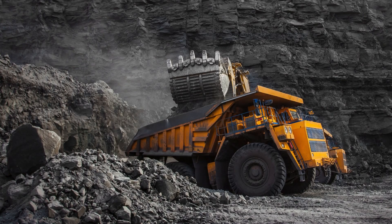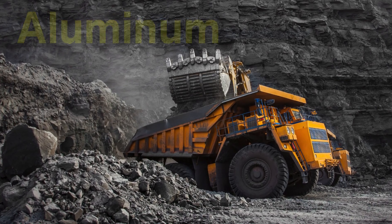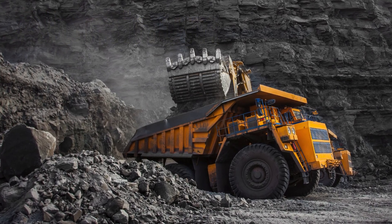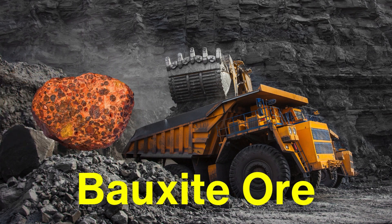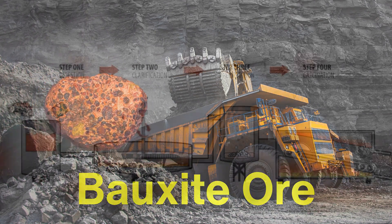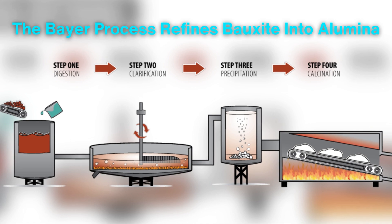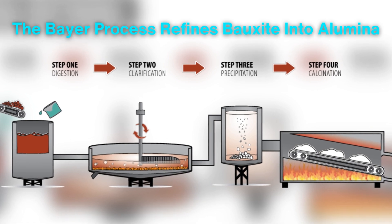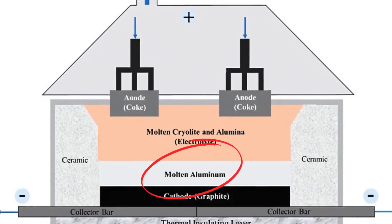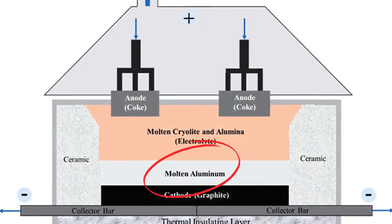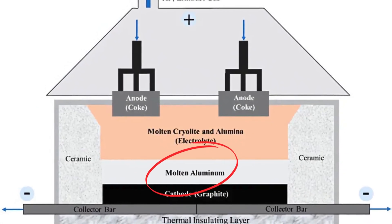Similarly, aluminum, another popular conductor material, is extracted from bauxite ore. The Bayer process refines bauxite into alumina, which is then reduced to pure aluminum using electrolysis in large smelting facilities.